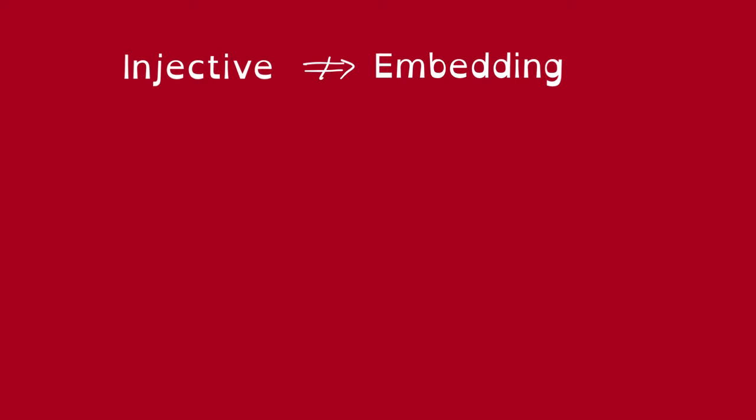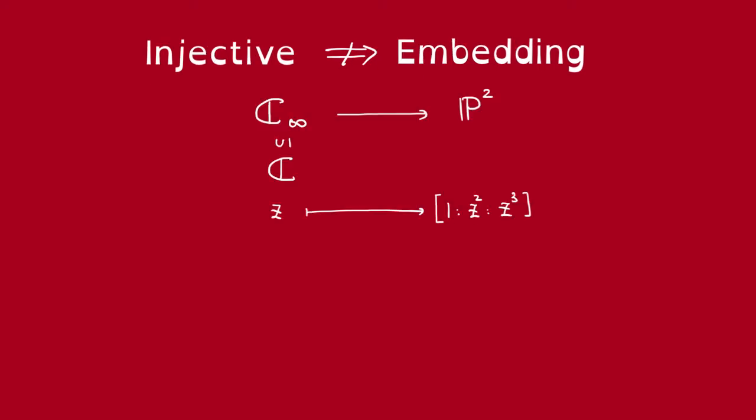Let's look at an example. Let's look at the following injective map on the Riemann sphere, from the compact Riemann surface, which is the Riemann sphere, to P^2. Now, we will write it in terms of local coordinates, so we view the Riemann sphere as containing C, a copy of C, and then the point at infinity, so this map z to this point.